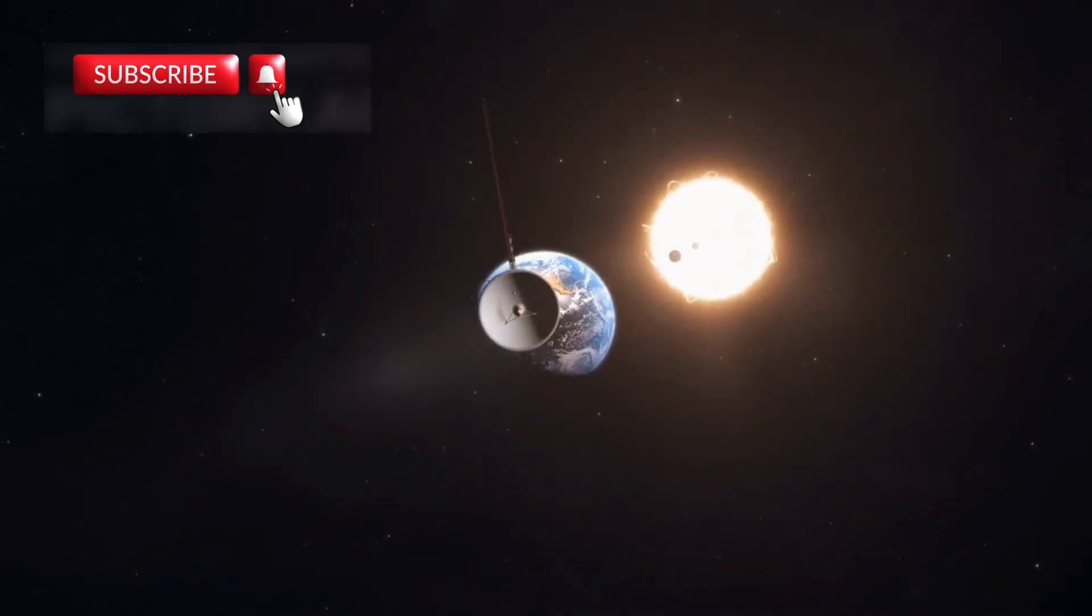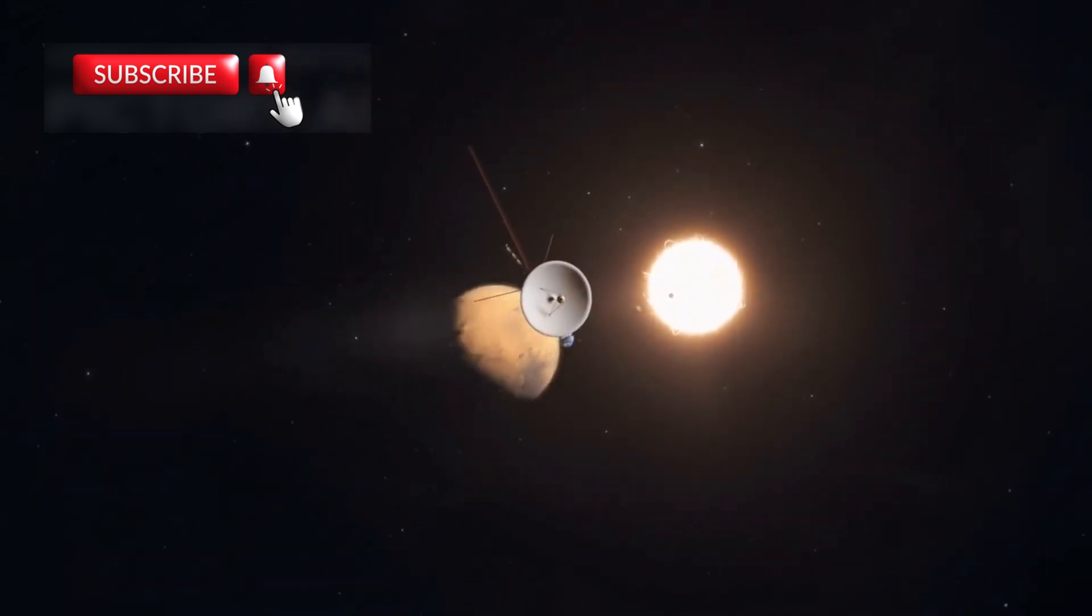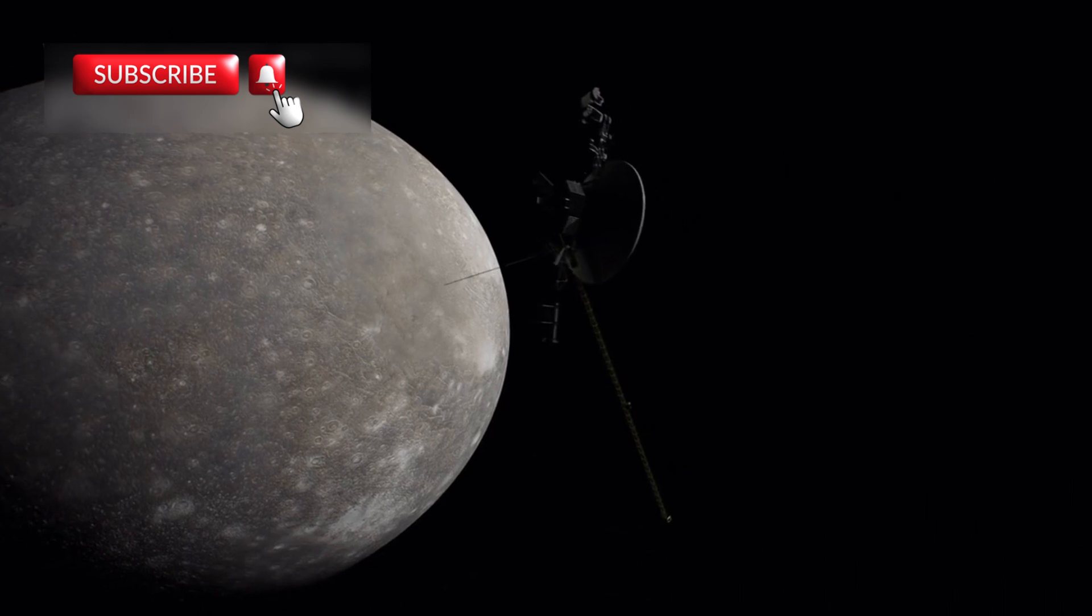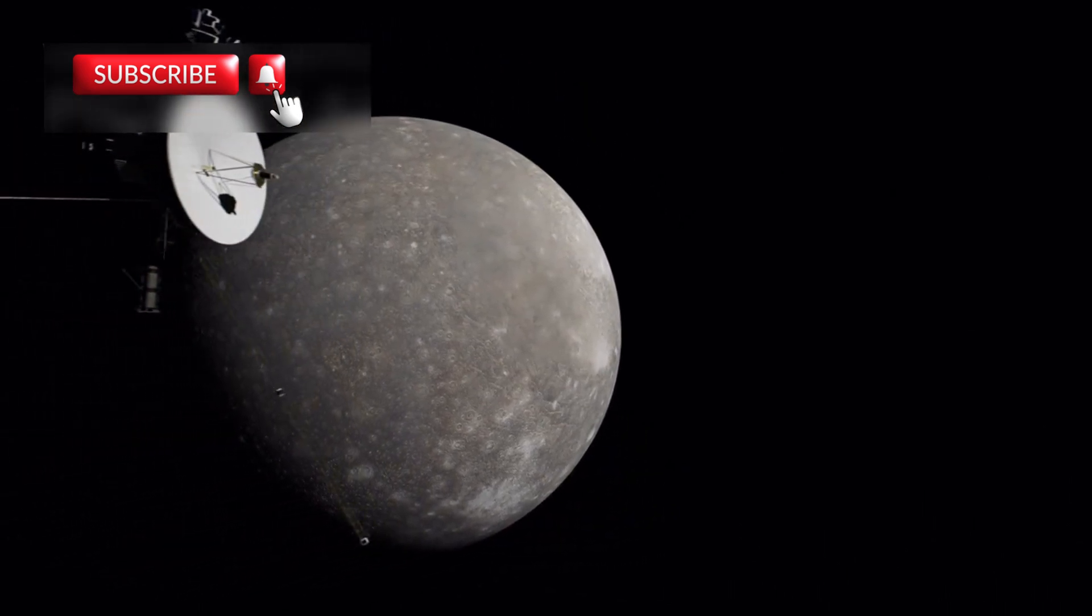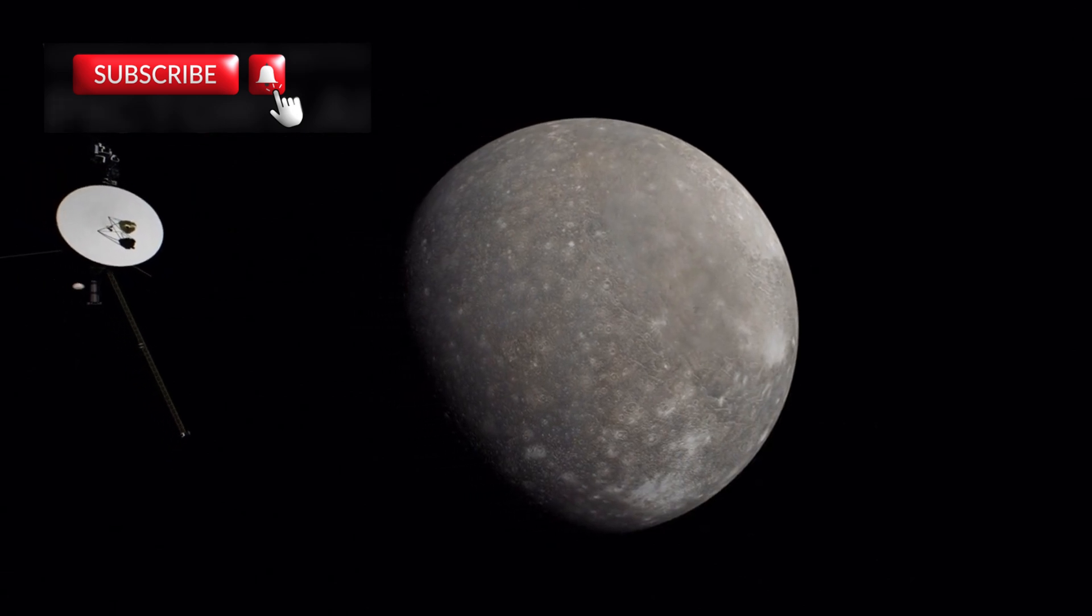It has traveled beyond our solar system and now floats more than 14 billion miles away from Earth, still sending valuable information back to us. In 2012, Voyager 1 crossed the heliopause, the invisible boundary where the sun's influence ends and the vast interstellar medium begins.